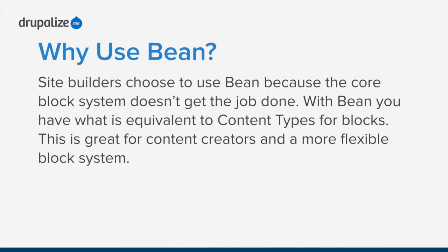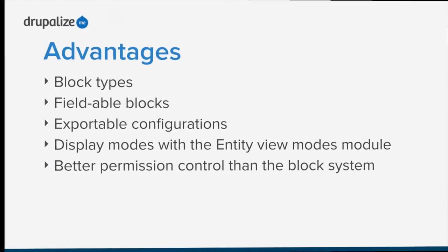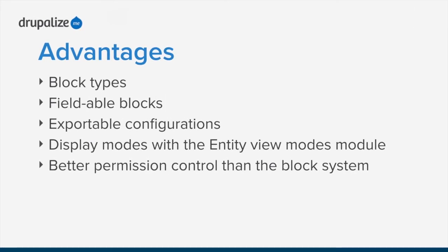Why use the Bean module? Site builders choose Bean because the block system just doesn't get the job done - all you get are a very limited set of tools. With Bean, you have the equivalent of content types for blocks, which is great for content creators and a more flexible block system. The advantages include: block types similar to content types, fieldable blocks, exportable configurations, display modes and view modes, and much better granular permissions than the core block system.